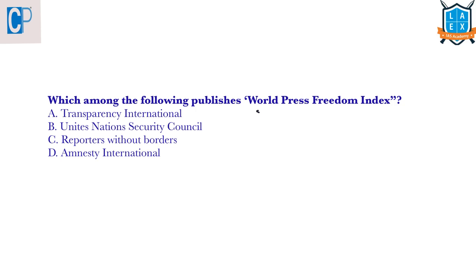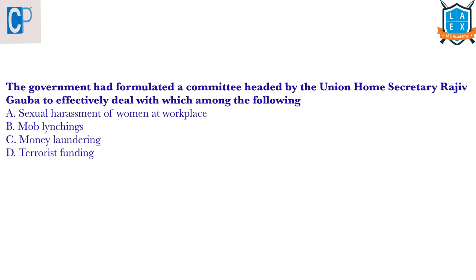The first question is: which among the following publishes the World Press Freedom Index? The answer is Reporters Without Borders, which is a non-governmental organization based in France. The next question: the government had formulated a committee headed by union secretary Rajugawa to deal with mob lynchings, whereas another committee was headed by union Home Minister Rajnath Singh to deal with the issue of sexual harassment of women at the workplace.